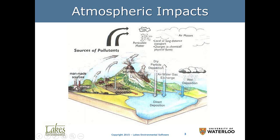We also have natural sources — this is a volcano. We also have dust, desert dust. We have emissions from forests; they emit a lot of volatile organic compounds. All of this emits to the atmosphere and is transported by winds.